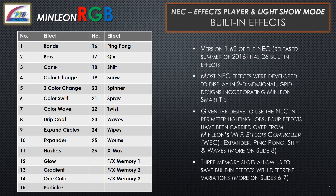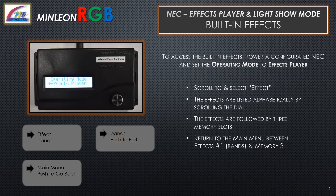Refer to the chart at the left. Three memory slots allow us to save built-in effects with different variations. To access the built-in effects, power a configured NEC and set the operating mode to Effects Player. Scroll to and select Effect. The effects are listed alphabetically by scrolling the dial, followed by three memory slots. Return to the main menu between effect number one, which is Bands, and Memory 3.